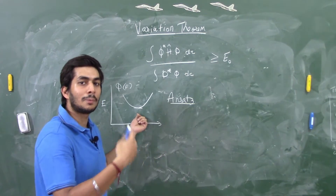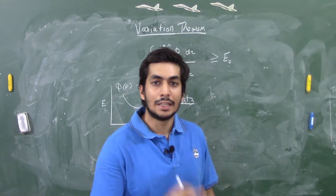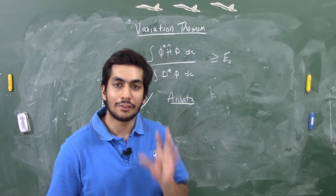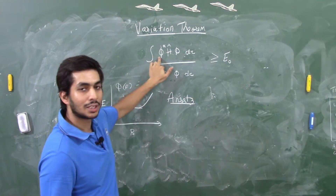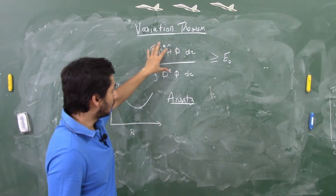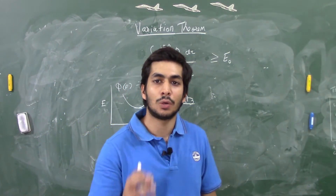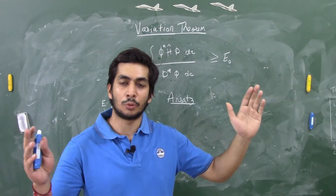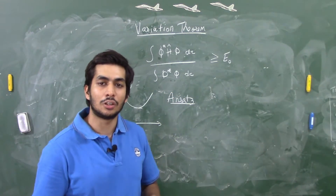Variation theorem also states something very important: no matter what kind of trial wave function you take and no matter how much you vary the parameters, you will never get an energy lower than the true ground state energy. The formula for calculating the energy uses φ* (phi-star) as your trial wave function. The trial wave function must obey the boundary conditions of the system — for example, for a particle in a 1D box, the potential is infinity outside and zero inside.